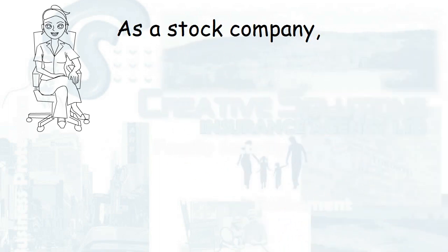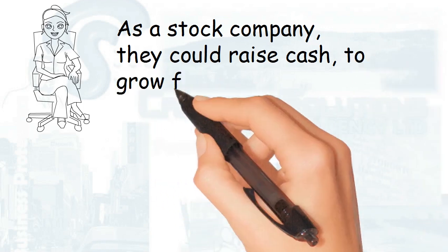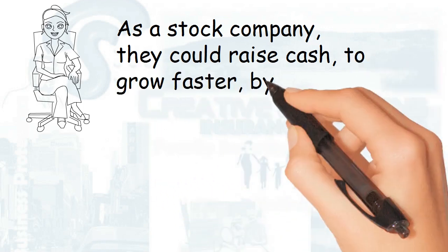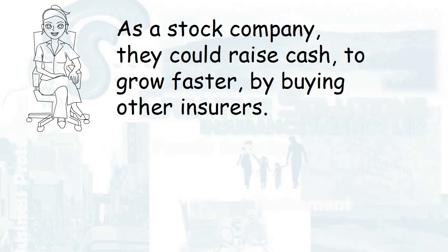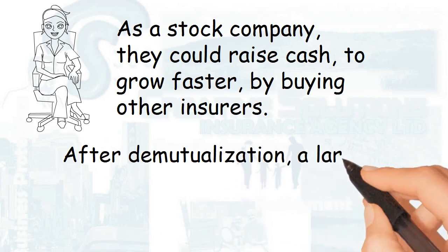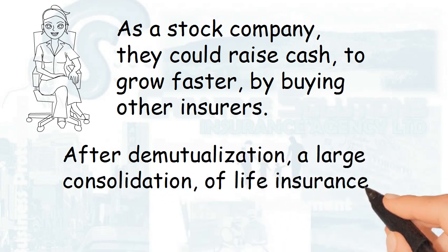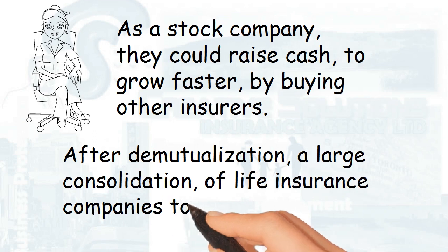Many other mutual life companies demutualized to become stock companies. As stock companies, they could raise cash to grow faster by buying other insurers. After demutualization, a large consolidation of life insurance companies took place.